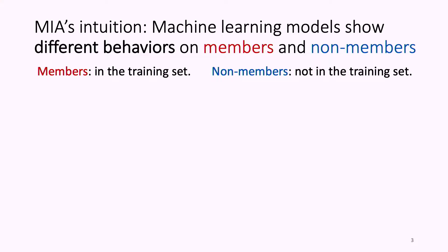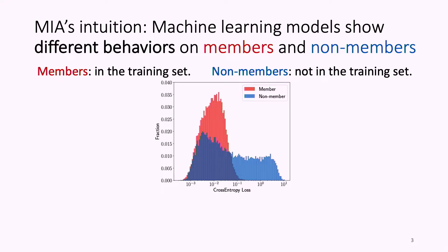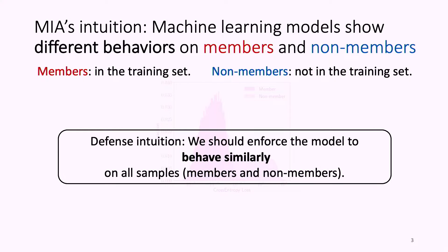The success of membership inference attacks is usually because machine learning models have different behaviors on members and non-members. Members are samples in the training set and non-members are samples not in the training set. Here is a distribution of cross-entropy loss on members and non-members, and we can see the significant difference between these two distributions. Our defense intuition is that we should enforce a model to behave similarly on all samples, including both members and non-members.